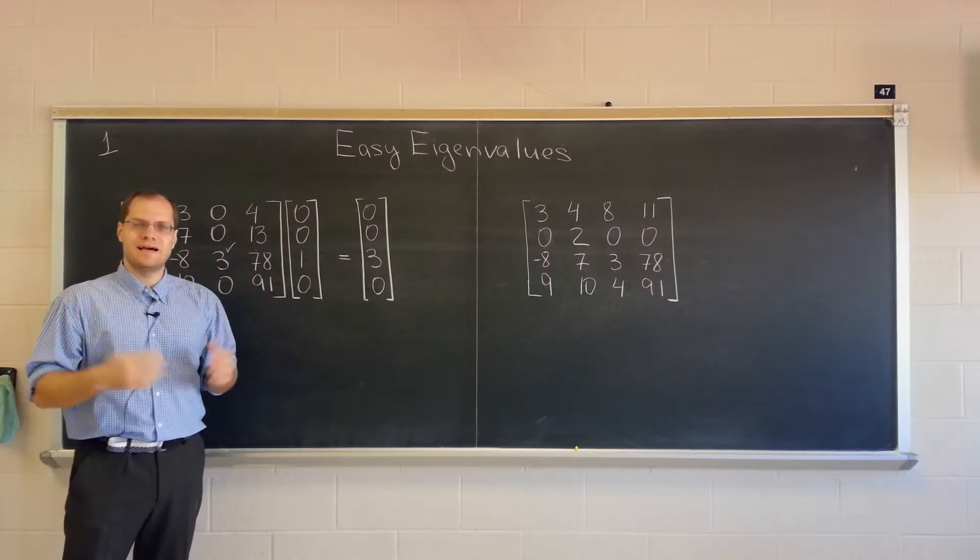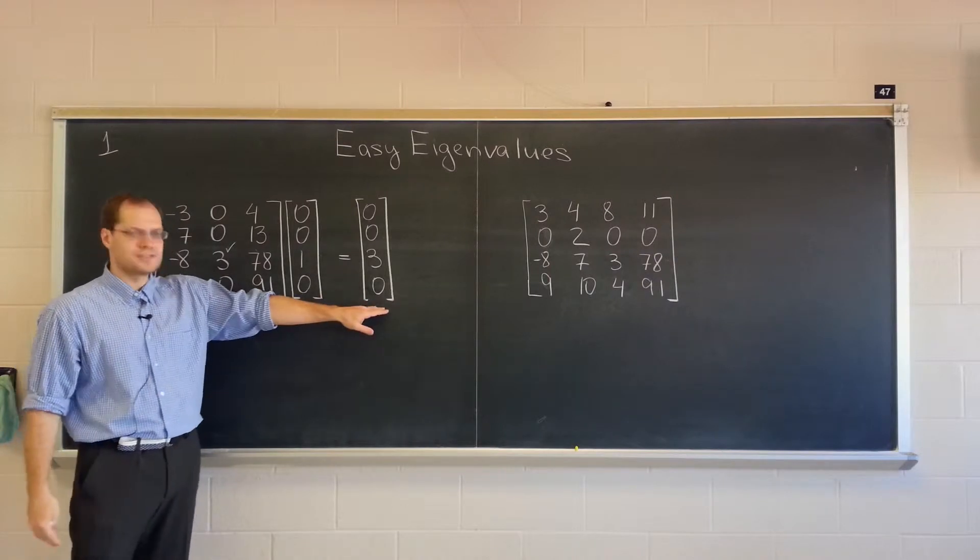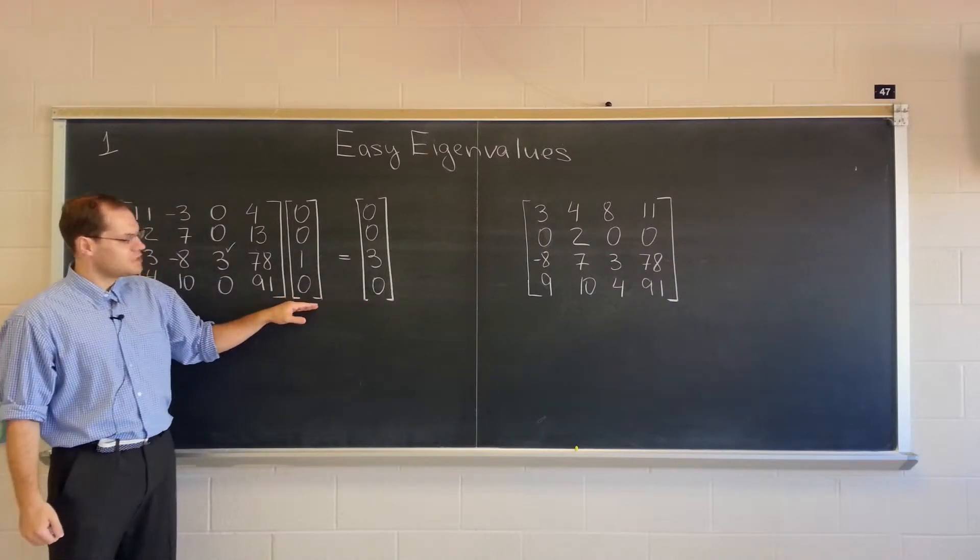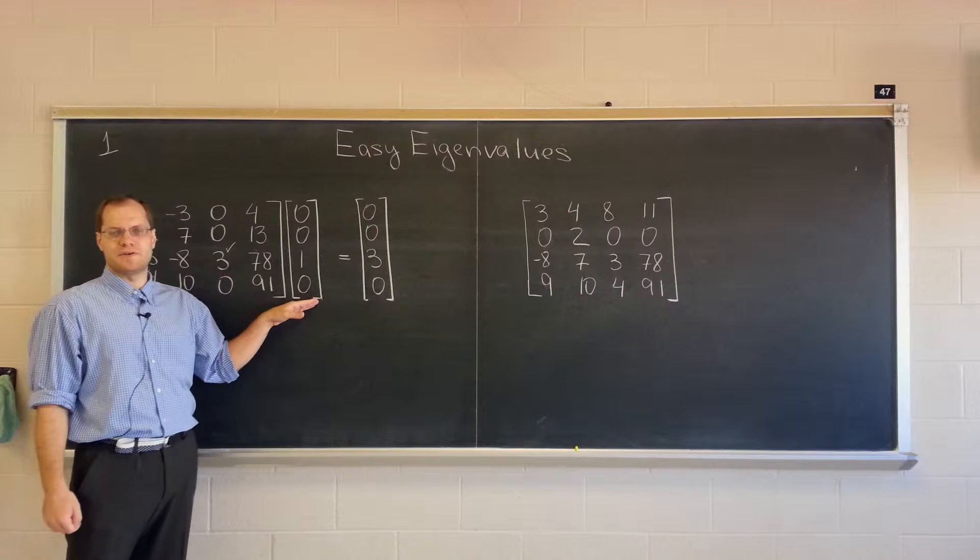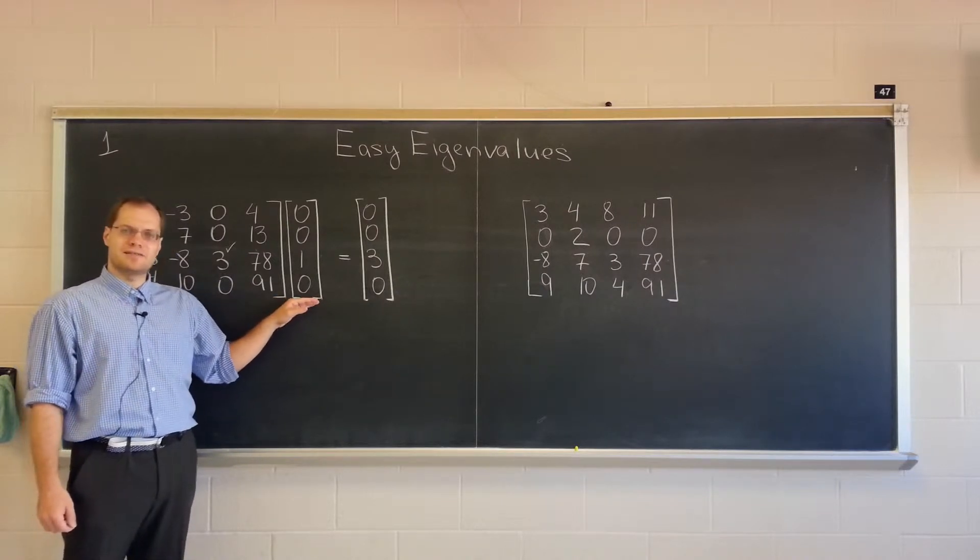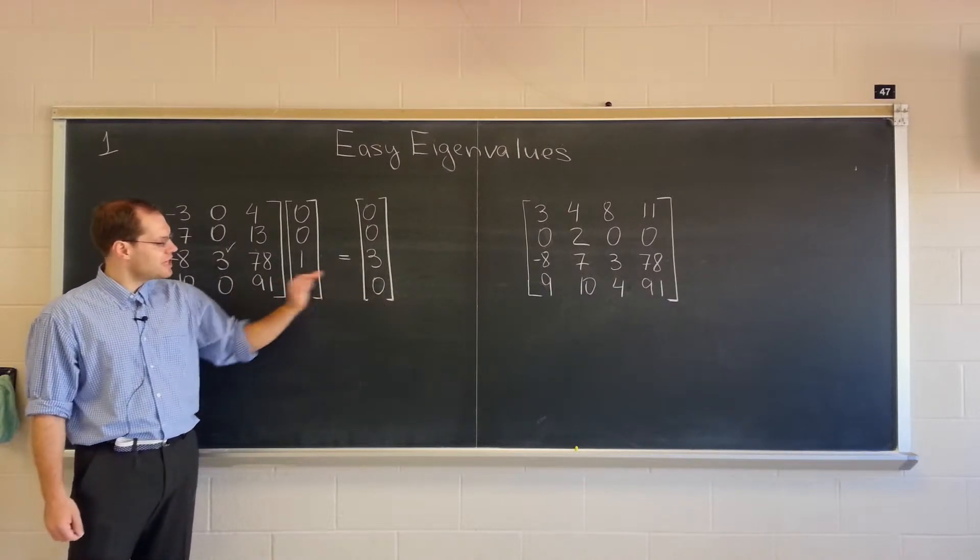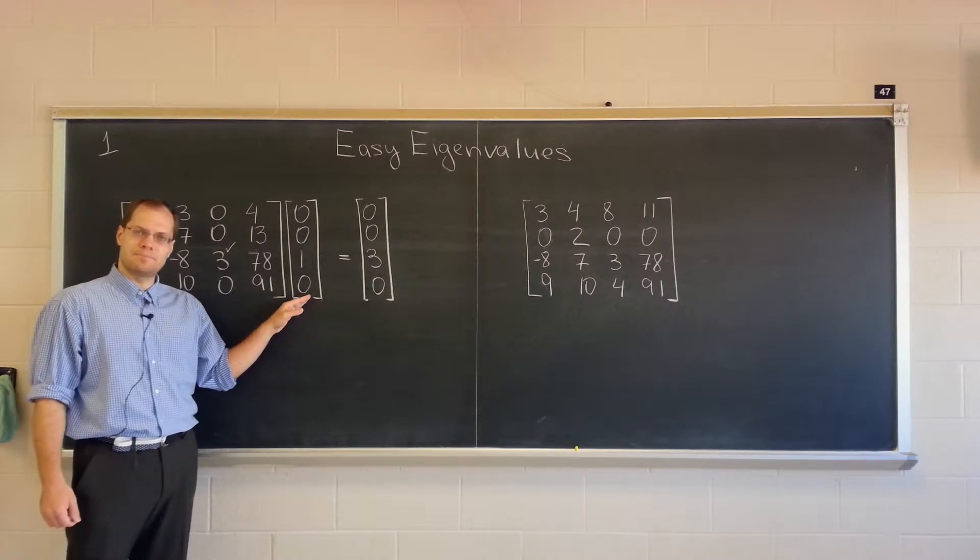we ask ourselves the key eigenvalue question. Is the result a straight multiple of the input vector? And in this case, the answer is yes, because the result just happens to be exactly three times the input vector.